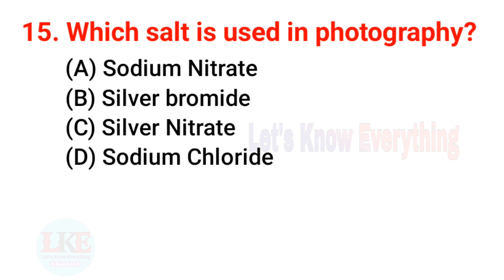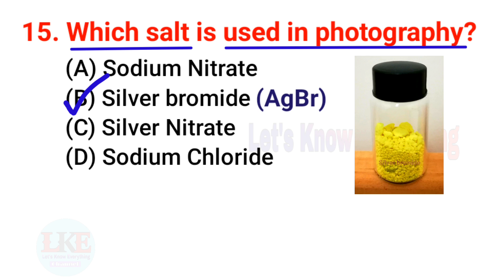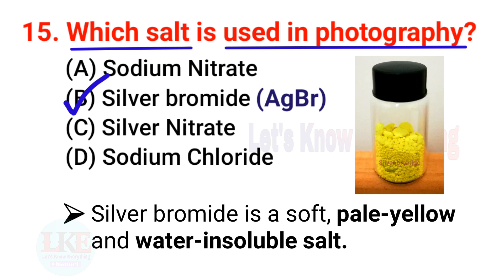Question number 15: which salt is used in photography? Right answer, option B: silver bromide. Its chemical formula is AgBr. Silver bromide is a soft, pale yellow, water-insoluble salt.